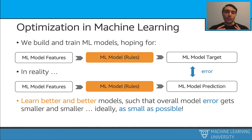The optimization methods are usually iterative processes. At each iteration, we will hope to see that the error goes down and eventually almost goes to zero.